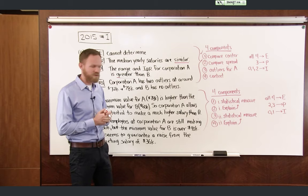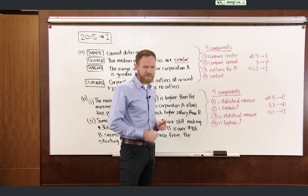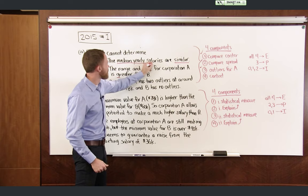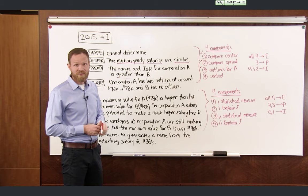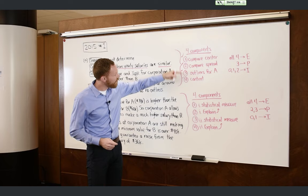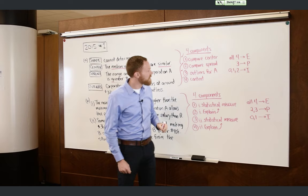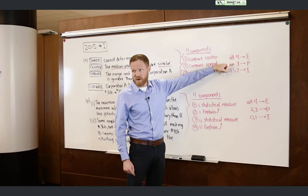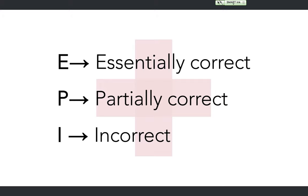It's very important to use a comparative word like 'less than,' 'greater than,' or 'similar to,' rather than simply listing the values for each corporation. We also had to address the outliers for A — two outliers for corporation A — and establish context by mentioning 'median yearly salaries.' That context only needs to be stated once. With all four components, Part A is graded E (essentially correct); three components is P (partially correct); zero, one, or two is I (incorrect).